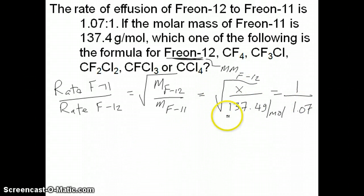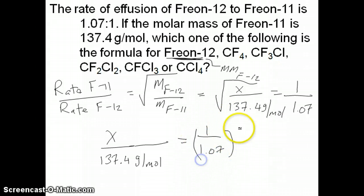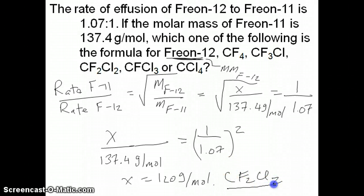I can then square both sides of this equation, so then I'm left with X over 137.4 grams per mole on the left equals to the square of that quantity, and then I just solve for X. I get X equal to 120 grams per mole or thereabouts. Then what you'd have to do is find a molar mass that's closest to this for all of the formulas that are given here. And if you do that, you'll find that CF2Cl2 has that actual molar mass, the same one that's shown right here.